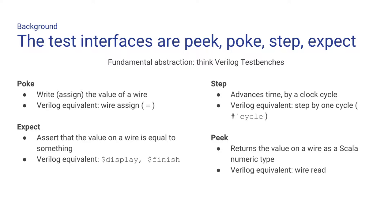These are your basic test abstractions. Poke is basically write or assign the value of a wire — the Verilog test bench equivalent is wire assign. Expect is an assert: check that the value on a wire is equal to something. Verilog apparently does not have a built-in assert function, so people do display and finish — apparently a common macro. Step advances time by a clock cycle. Testers doesn't expose wall-time abstraction; it's purely clock-based. Peek returns a value on a wire as a Scala numeric type — it queries the simulator for the value on the wire and gives it back to Scala.